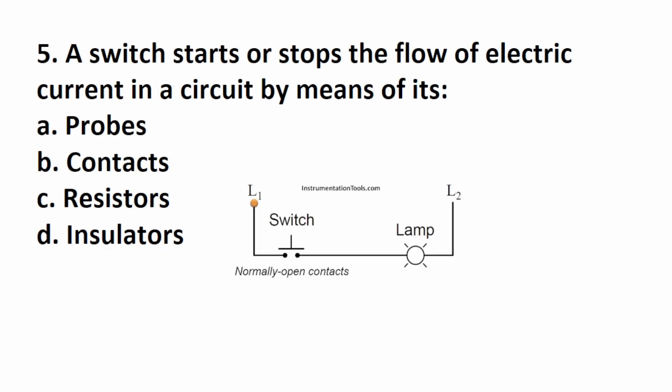Number five says, a switch starts or stops the flow of electric current in a circuit by means of. Here's a simple circuit where we have a lamp and a switch. You can see that the contacts in the switch are responsible for either starting or stopping the flow of electrical current. So this one is going to be B, contacts.